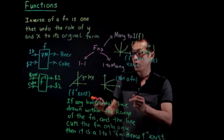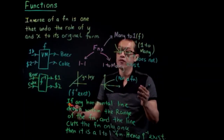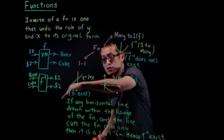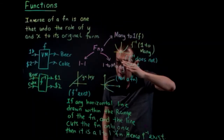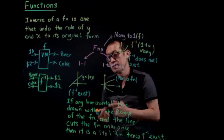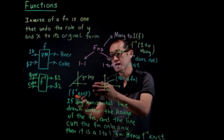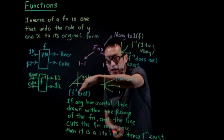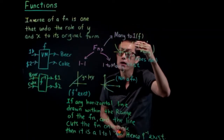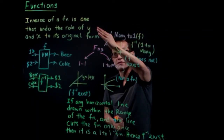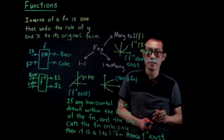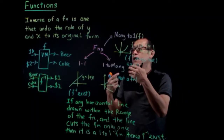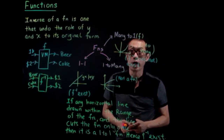For F inverse to exist, the function must be strictly increasing or strictly decreasing. If it is strictly increasing, there is no turning point and it is a one-to-one function. Similarly, if it is strictly decreasing with no turning point, then F inverse also exists.